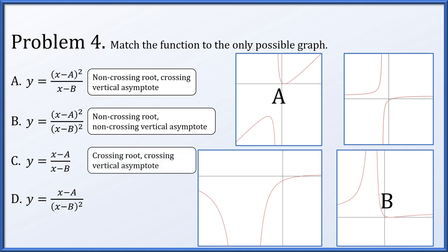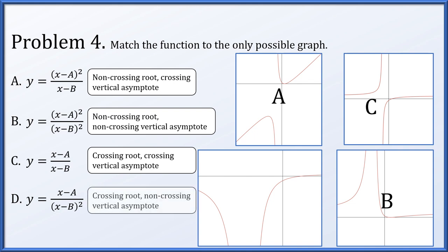For C, we're looking for a crossing root and a crossing asymptote, as both have multiplicity 1. That's option C in the upper right — a single root where the graph changes from negative to positive, and a single vertical asymptote where sign changes from one side to the other. Finally, option D has a crossing root (numerator root of multiplicity 1) and a non-crossing vertical asymptote (denominator root of multiplicity 2). That matches the only remaining graph.